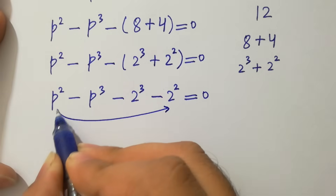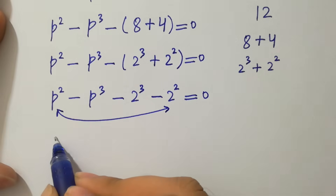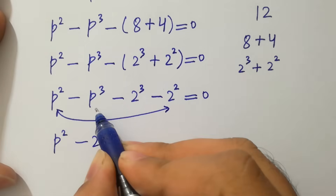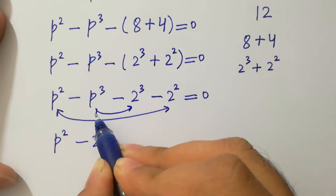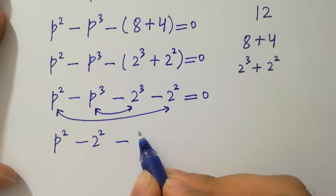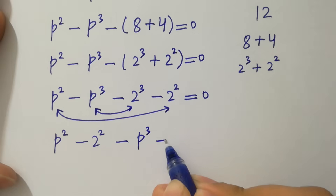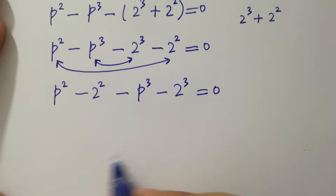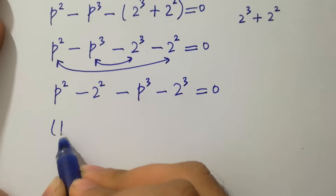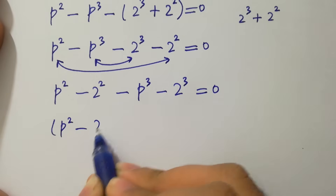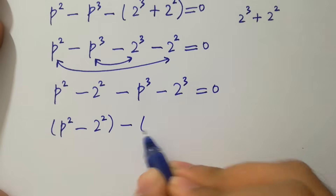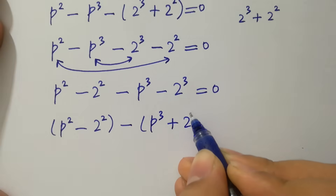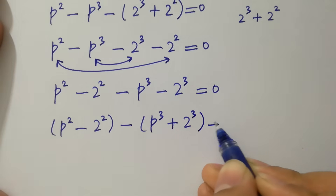By grouping corresponding terms, we have p squared minus 2 squared, and here we have minus p cubed minus 2 cubed, giving us: bracket(p squared minus 2 squared) minus (p cubed plus 2 cubed) equals zero.